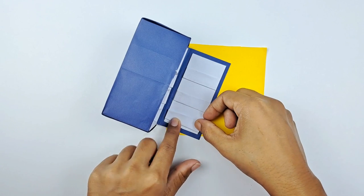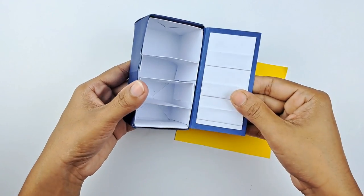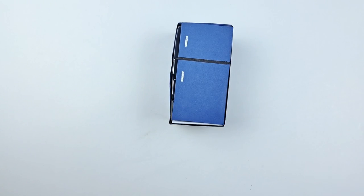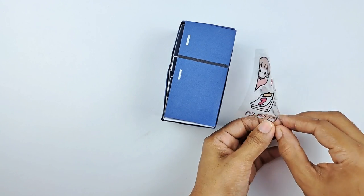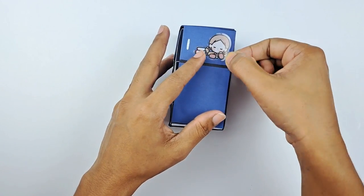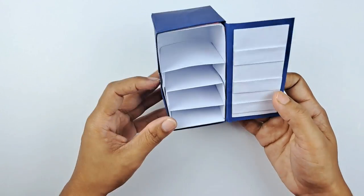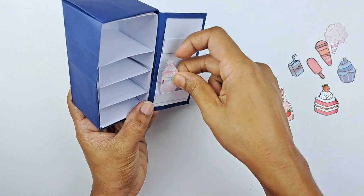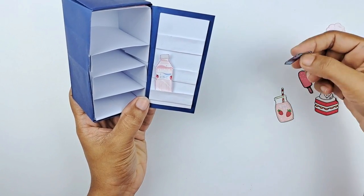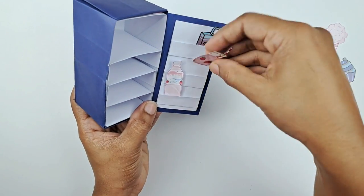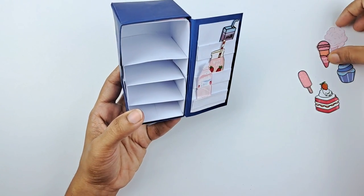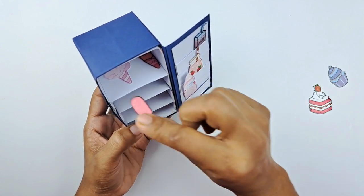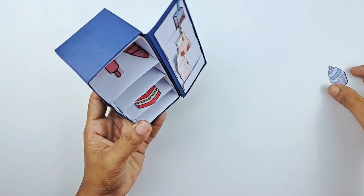And now we're going to get some of our fun stickers. And we're going to decorate our mini fridge. We've got some milk and some juice, some ice creams, and some cake and some more cake. It's a very healthy fridge.